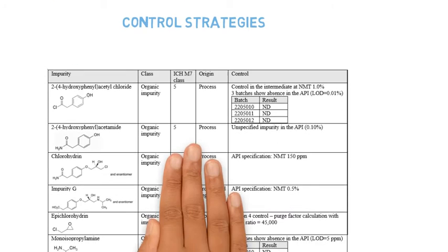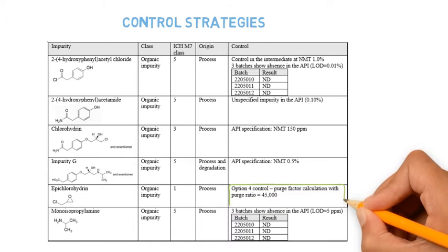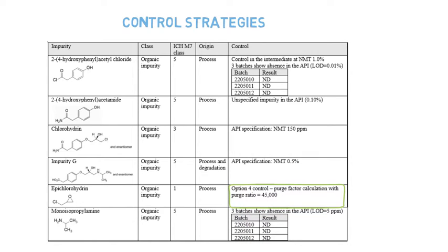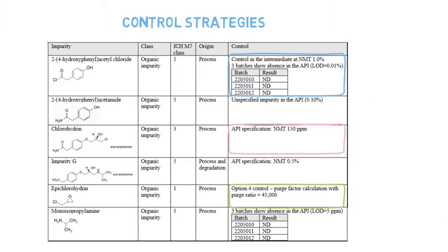in line with the strategies described in ICH Q11. Can its elimination be justified through a purge factor calculation? Is there any in-process control or in isolated intermediates? Or is it controlled in the API specification?